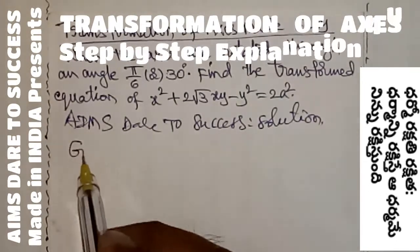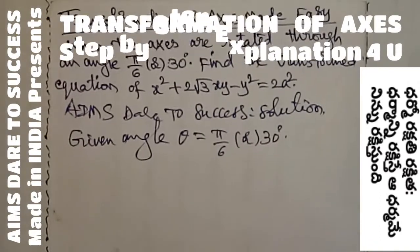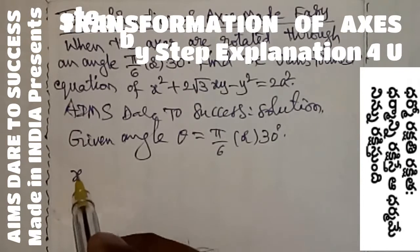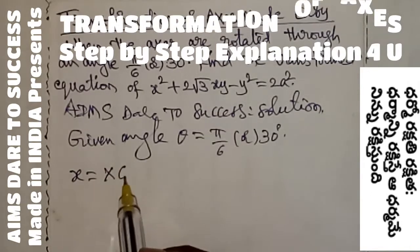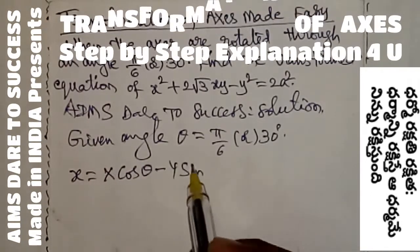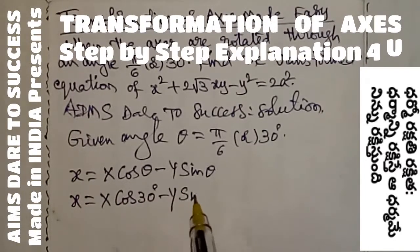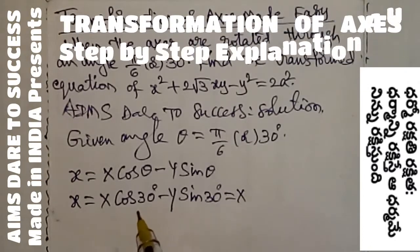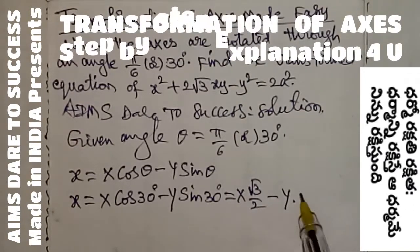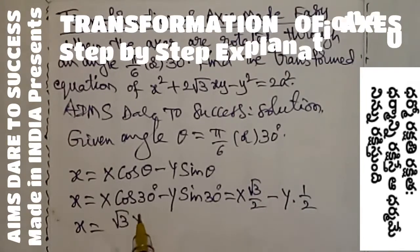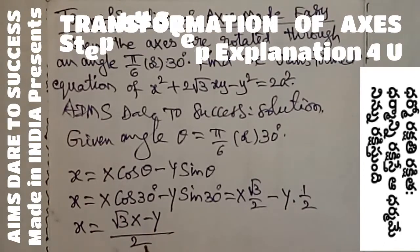Given: angle θ = 5π/6, which means 30 degrees. To find the transformed equation, I write the small x formula. According to the box: small x = capital X·cos θ − capital Y·sin θ, with θ = 30°. So small x = X·cos 30° − Y·sin 30° = X·(√3/2) − Y·(1/2) = (√3·X − Y) / 2.